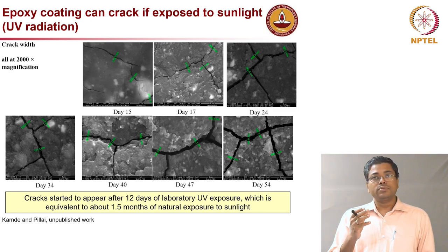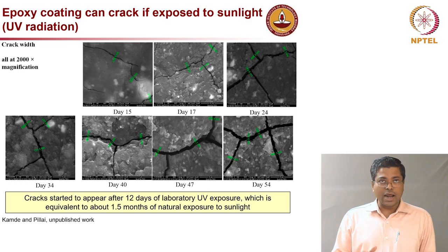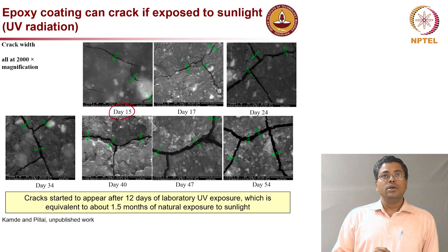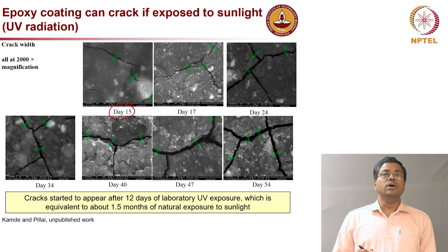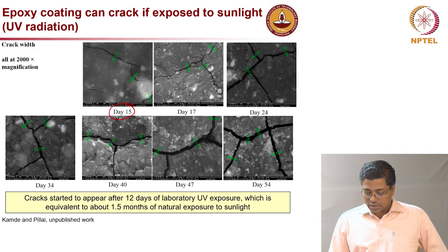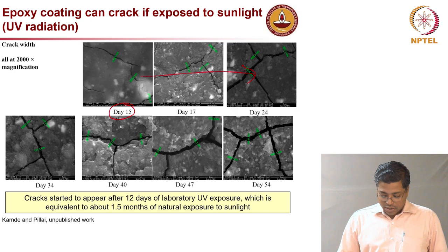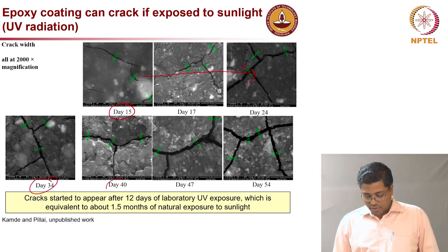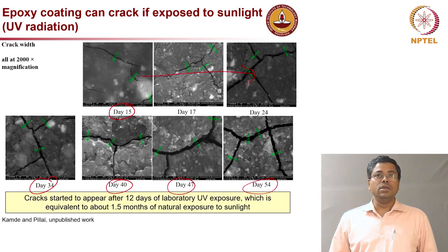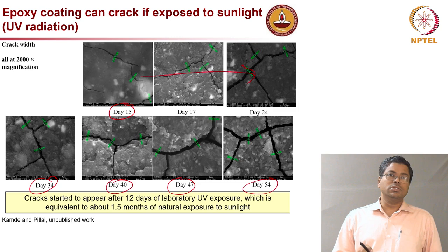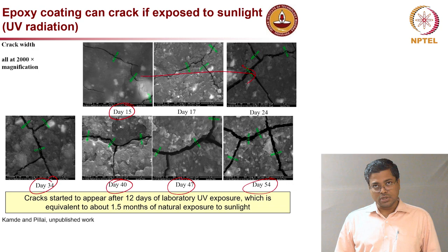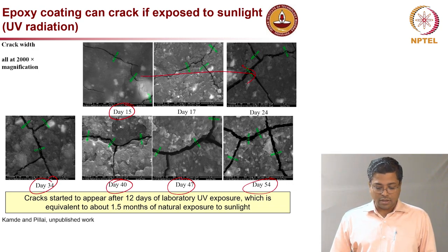When epoxy coated rebars are exposed to UV radiation, cracks tend to form in about 15 days. The crack width is about 0.3 micrometers and slowly increases over time — by day 34, 40, 47, 54, the crack width keeps increasing. More and more volatile material is being lost from the epoxy coating. Once cracks form, it is very easy for moisture, oxygen, and chlorides to penetrate and lead to under-film corrosion or crevice corrosion.